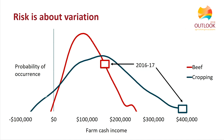The squares show where farm cash income was last financial year. As you can see, it was way above average in the cropping industry and well above average in the beef industry. In practical terms, we don't really think about this kind of upside variation as risk. When we talk about risk, what we're really worried about is the values on the left-hand side of each distribution — the really low values of farm profit.